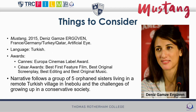Mustang itself is set in Turkey but is not necessarily a Turkish film because the funding came from a variety of different sources — part French, part German, part Turkish and part Qatari — and it was distributed by Artificial Eye. The language is Turkish and it did very well critically. It won the Europa Cinemas Label Award at the Cannes Film Festival and won several César Awards including Best First Feature, Best Original Screenplay, Best Editing and Best Original Music.